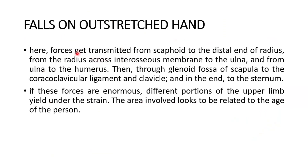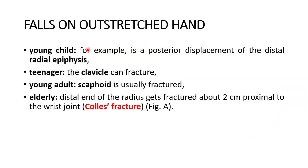In a fall on the outstretched hand, forces get transmitted from the scaphoid to the distal end of the radius, from the radius across the interosseous membrane to the ulna, from the ulna to the humerus, then through the glenoid fossa of the scapula to the coracoclavicular ligament, the clavicle, and ultimately the sternum. If the forces are enormous, different portions of the upper limb yield under the strain, and the area involved is related to the age of the person. The commonest of all these fractures is the Colles' fracture.